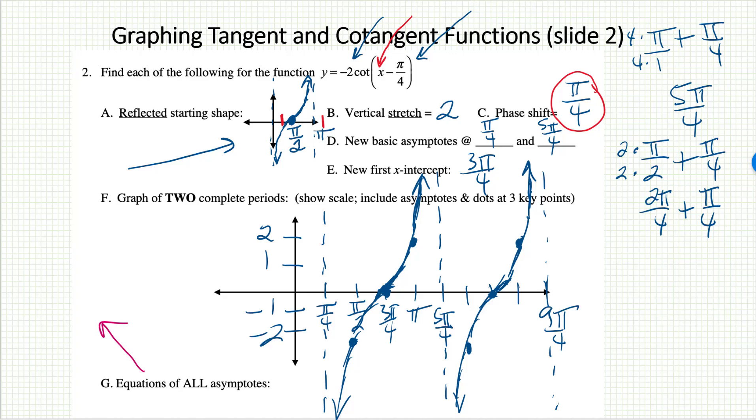As far as the asymptotes, the first one is there at pi over 4, and the distance between them is pi. Remember, the period didn't change in this problem, so multiples of pi. x equals pi over 4 plus k pi.